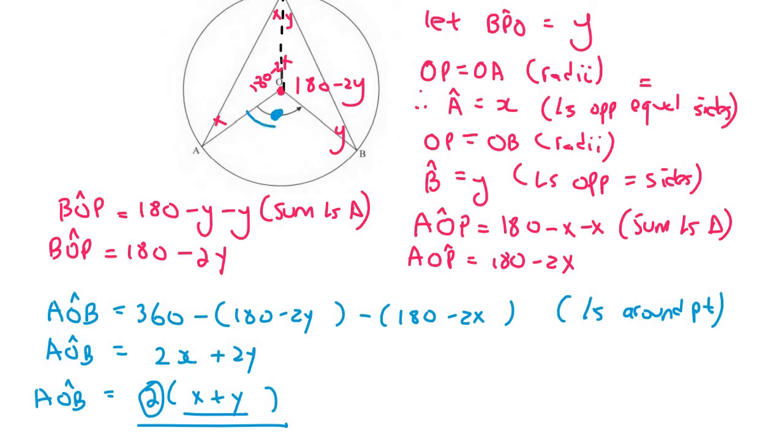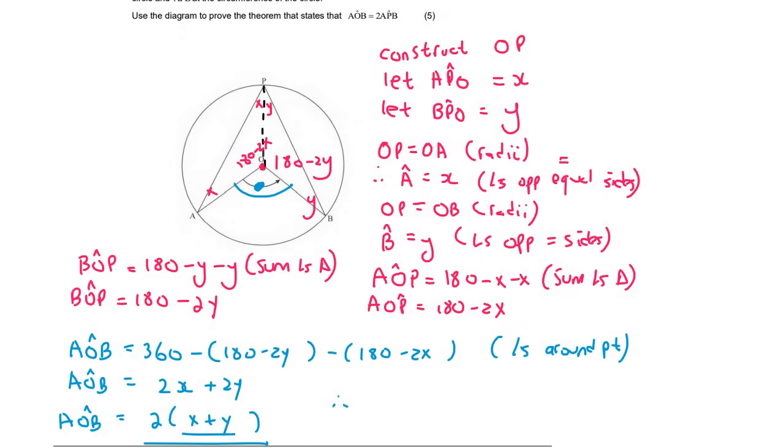And what we're now saying is that this angle is 2 of those. And so we've actually proven the theorem. And so we can finish this off by saying, therefore, AOP is 2 times APB.